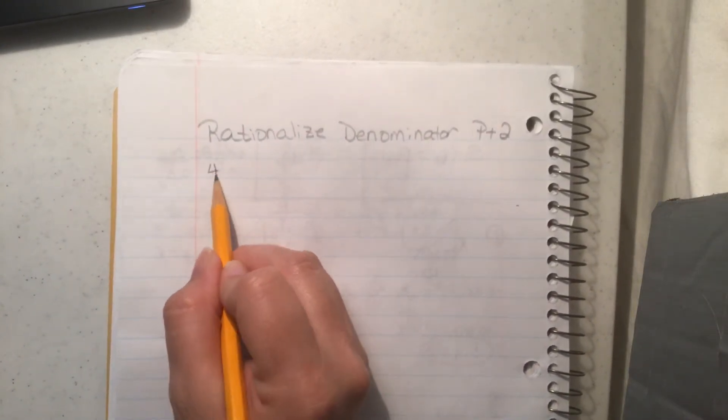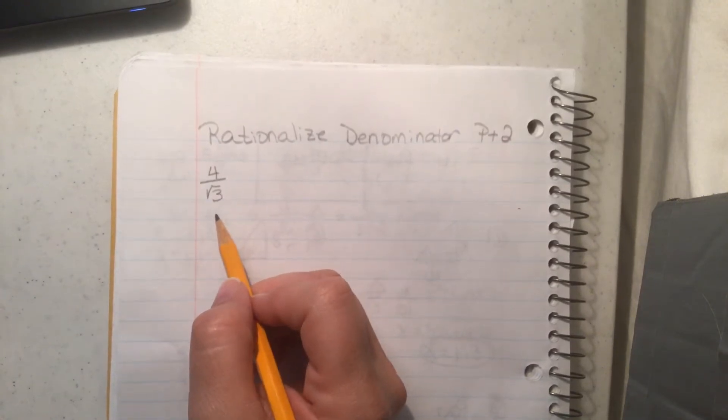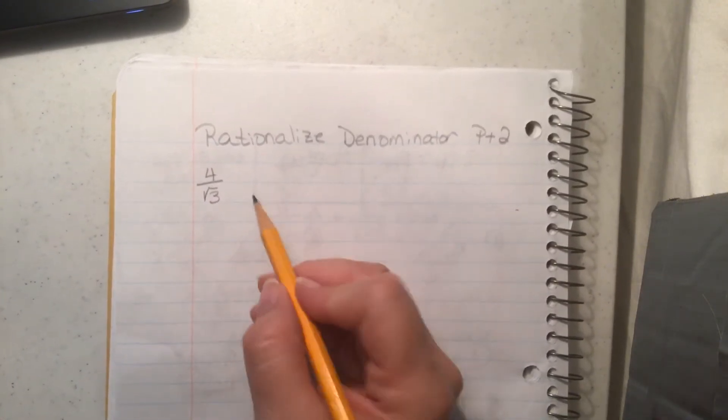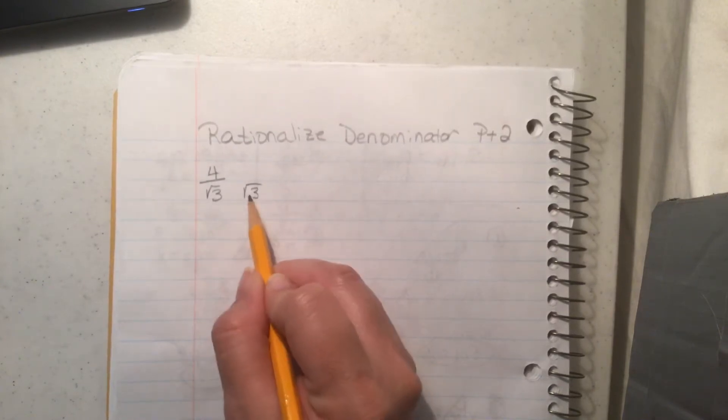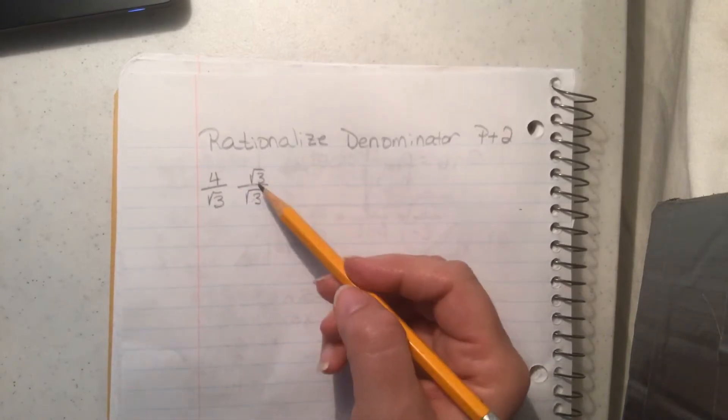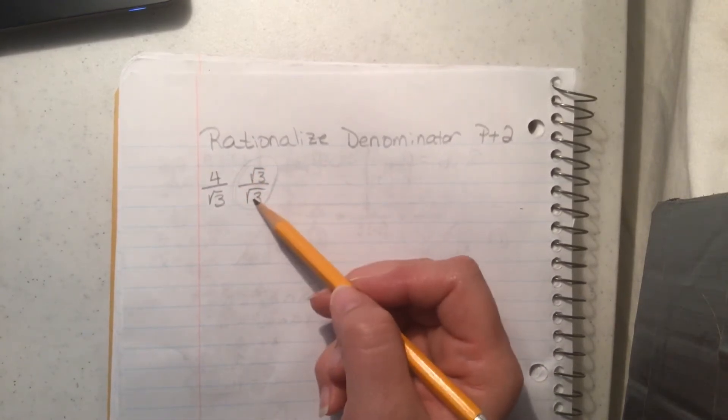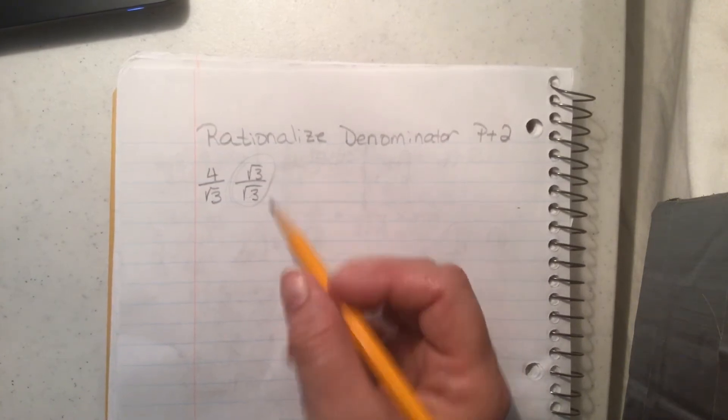The other day what we had is we had 4 over square root of 3 and we said, cannot have a radical in the denominator. So you've got to multiply the denominator by itself and the top by the same thing, because you can multiply any fraction by 1 and you haven't changed its value, just put a dress on it and made it look a little different.